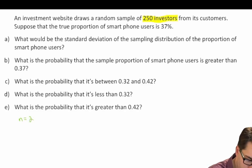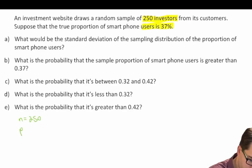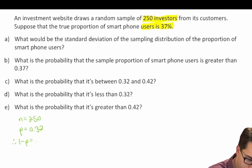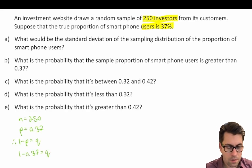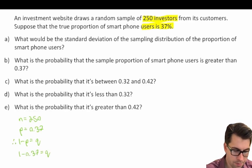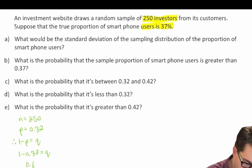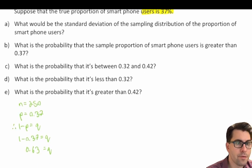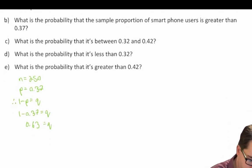Since n equals 250 and p equals 0.37, we find q: one minus p equals q, so one minus 0.37 equals 0.63 equals q. Now that we've written down what's given, let's go ahead and solve for Part A: what is the standard deviation of the proportion of our sample?